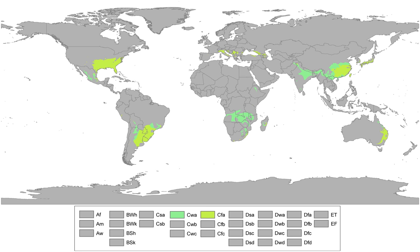In Africa, humid subtropical climates are primarily found in the southern hemisphere of the continent. The CWA climate is found over a large portion of the interior of the middle and eastern African regions, including central Angola, northeastern Zimbabwe, the Nyasa, Manika, and Tete provinces of Mozambique, the southern Congo provinces, southwest Tanzania, and the majority of Malawi and Zambia. Some lower portions of the Ethiopian highlands also have this climate.